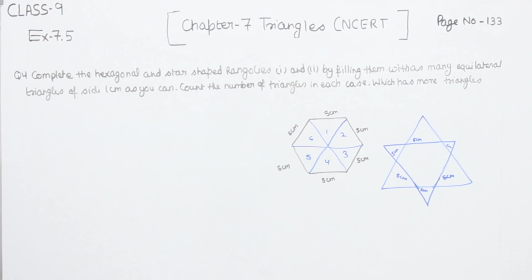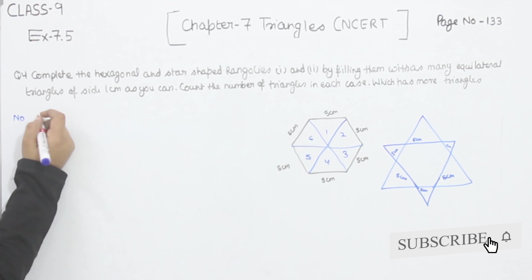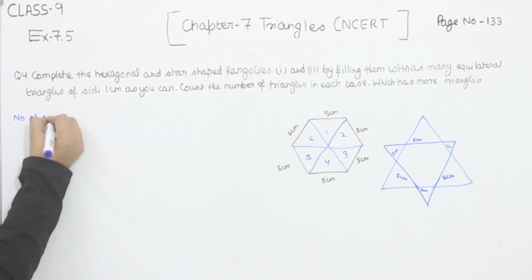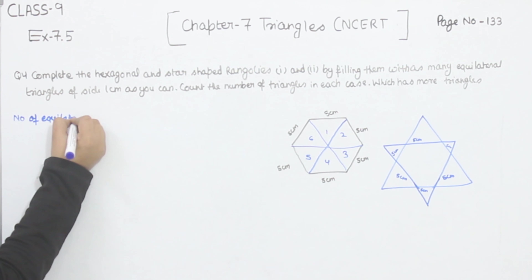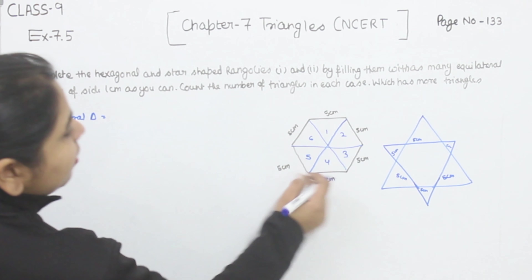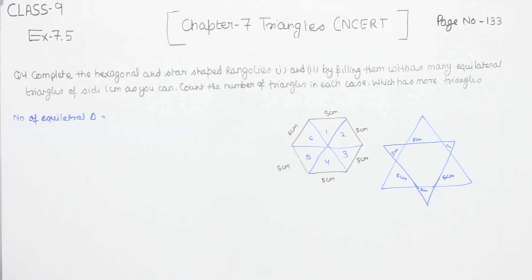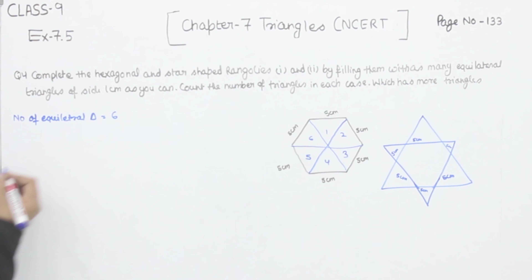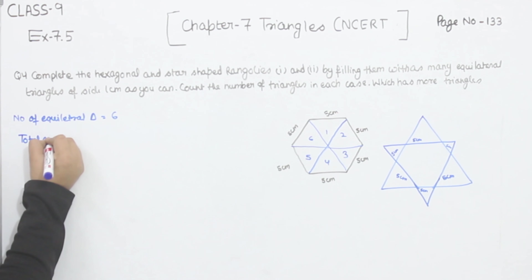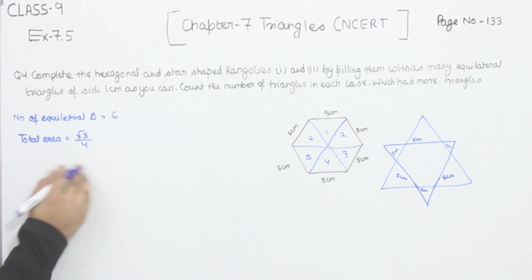Let's start with the first one — the hexagonal shape. I have drawn the line segments, and with this we are having six equilateral triangles. So the hexagonal shape contains six equilateral triangles.